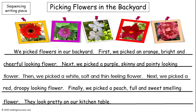Our fourth example is a sequencing writing piece. Displaying the pictures in the order taken, kids write about the sequence of picking the flowers while also including the adjectives for each flower.